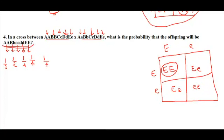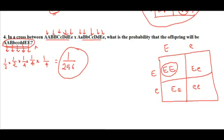We found the probability of each gene combination individually. Now we simply multiply them all together: one by two × one by two × one by four × one by four × one by four = one by 256. That is the probability of getting this particular combination from these two parents with five different genes. Using the multiplication rule made this very straightforward.